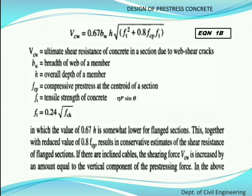In Equation 1b, Vcw is the ultimate shear resistance, bw is the breadth of the web, h is the overall depth of the member, fcp is the compressive prestress at the centroid of the section, ft is the tensile strength of concrete, and ft = 0.24 × √fck. In this modified formula the terms I and S are eliminated.